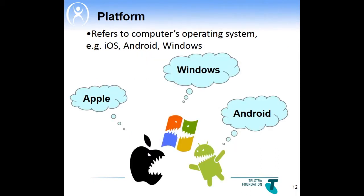The second term is platform, which refers to a computer's operating system. For example, an iPad runs on the iOS platform. The term platform is often used when referring to what kind of computer systems a certain software program will run on. Currently, we have three operating systems or platforms: Apple, Windows, and Android.